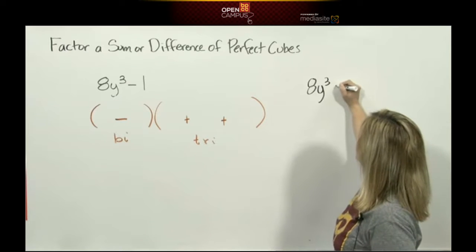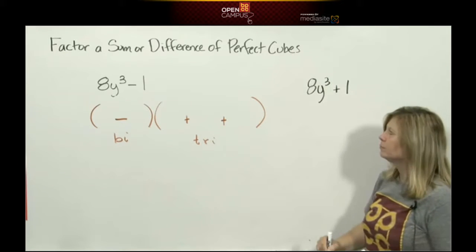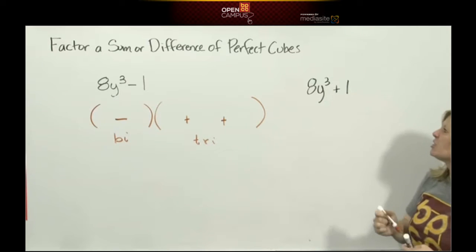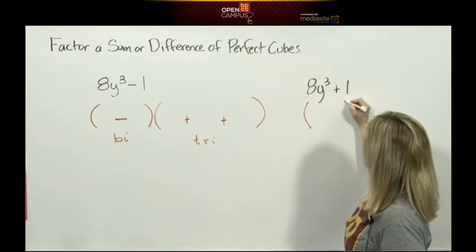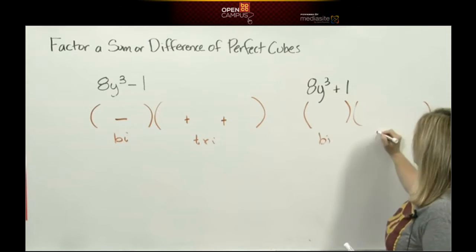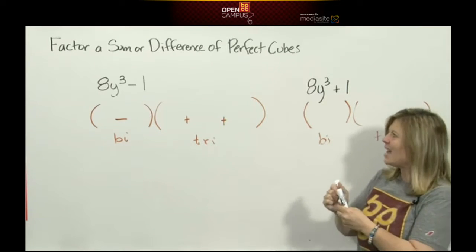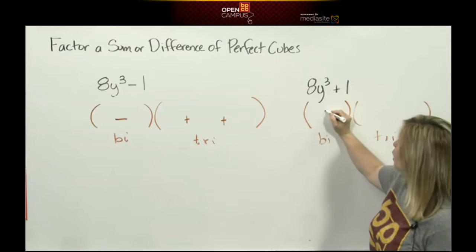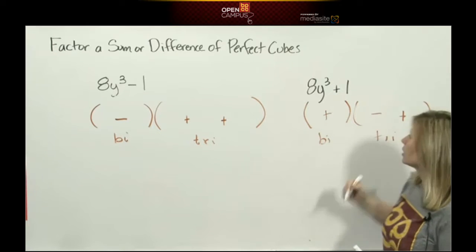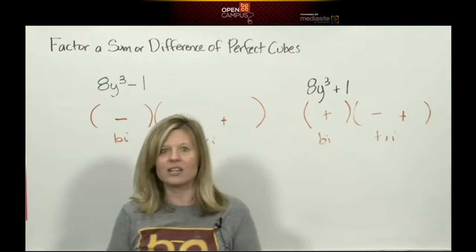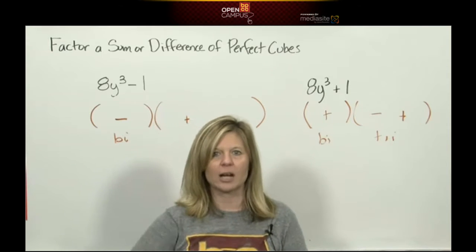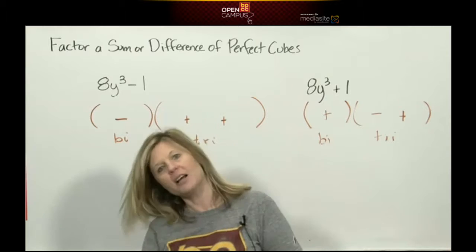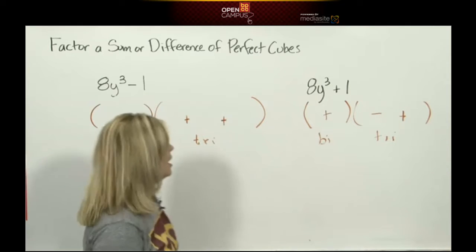The only difference would be the signs. If this was 8y³+1 this would be a sum of perfect cubes. If it was a sum of perfect cubes it still would be a binomial times a trinomial only then the signs would go in a different pattern. If it starts out as an addition it would go plus, minus, plus. So you have to memorize that ladies and gentlemen. So that's why I always make my class chant: plus, minus, plus, minus, plus, plus. Have fun with it.